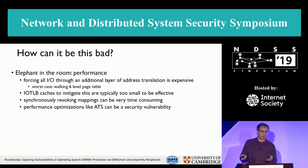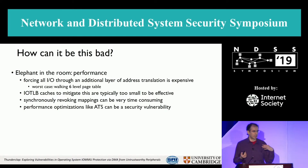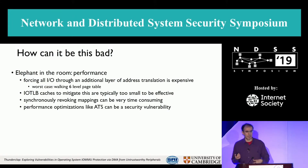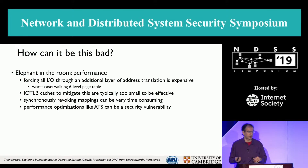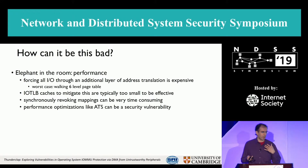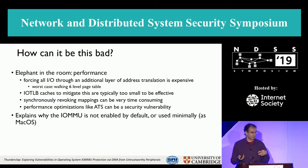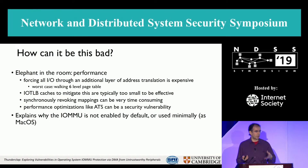Why is it this bad? The thing we haven't talked about is performance. Going through the IOMMU is expensive: page table walks, caches not big enough, and synchronous revocation to prevent the temporal vulnerability is expensive. Optimizations for that — like ATS — can themselves be a vulnerability. That explains why the IOMMU is not enabled by default, or like MacOS only uses it to a small degree.